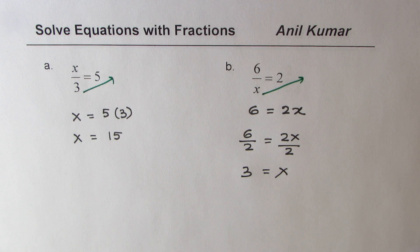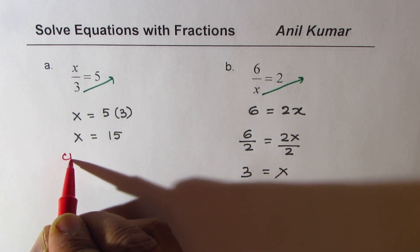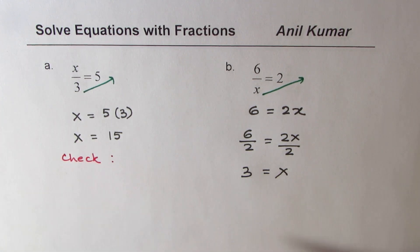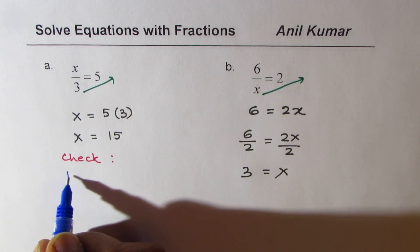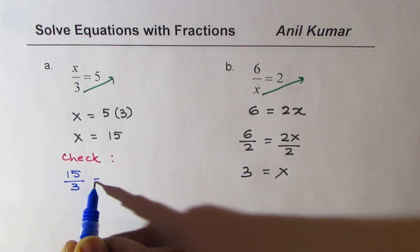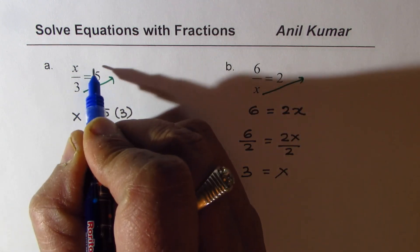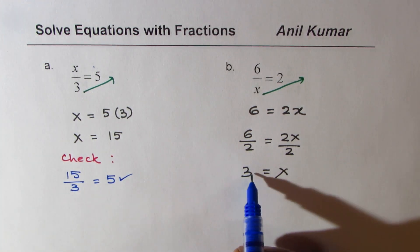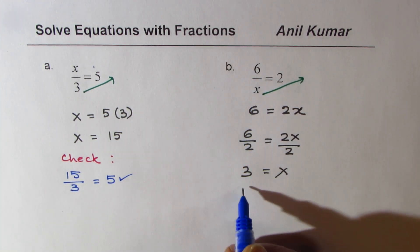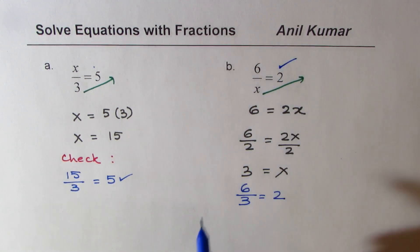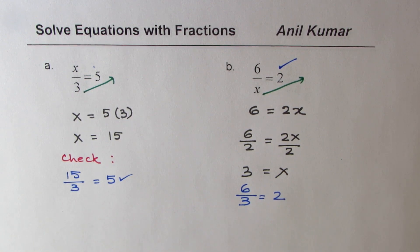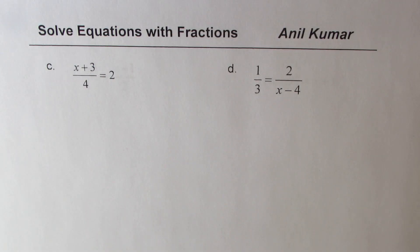As good practice, you should check your solutions. For X equals 15, substituting gives 15 divided by 3 which is indeed equal to 5. For X equals 3, we get 6 divided by 3 which is indeed 2. That is how you perform a check once you solve your equations. In other questions I won't do the check, but that is for you to do.